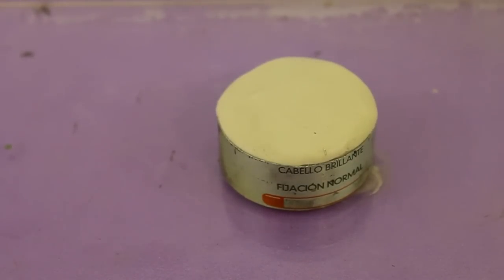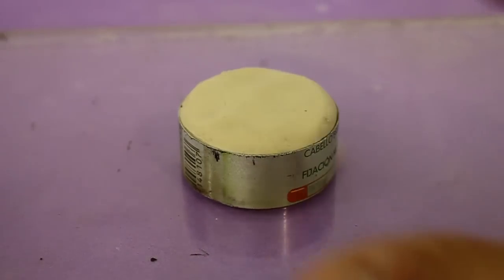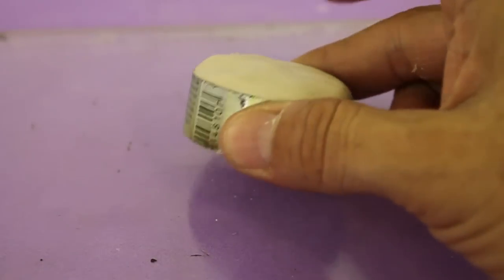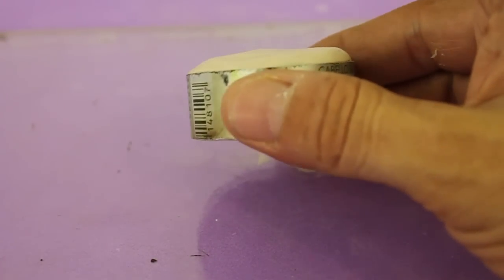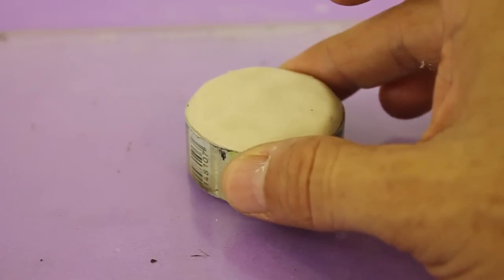Let it cure for about an hour before trying to pull it out. Before pulling it out, let's trim the excess material using the belt sander or a file.